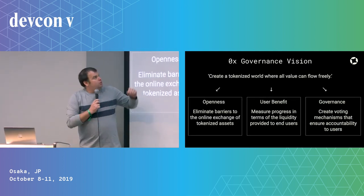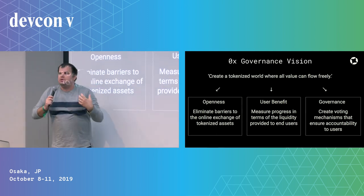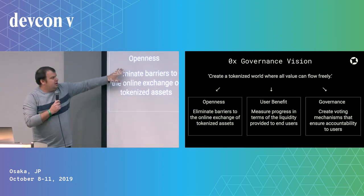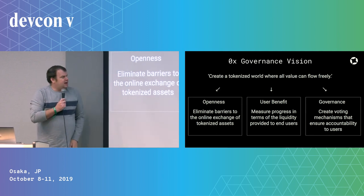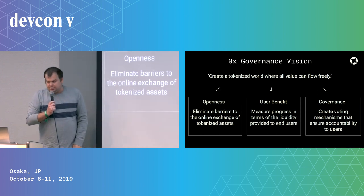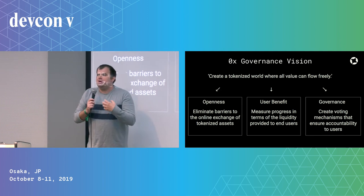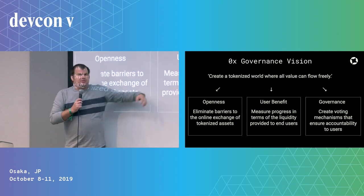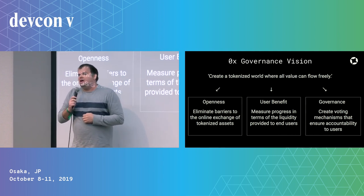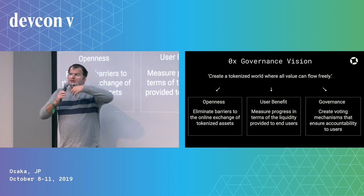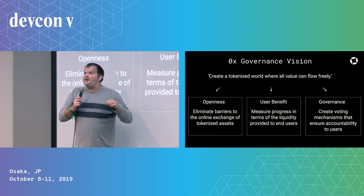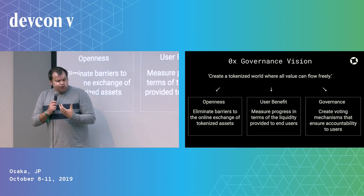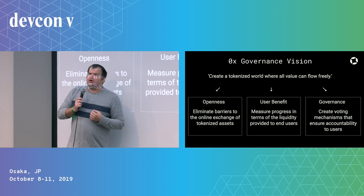This is important to our vision: to create a tokenized world where all value can flow freely — open and low-cost access to online exchange of tokenized assets. We measure our progress in terms of volume of tokens exchanged, prices available to users, and the variety of assets available on our relayers. To commit to this mission and ensure no rent extraction creates barriers, we want a governance mechanism that ensures the people who benefit from open access to online exchange are the same people determining the choices we make — accountable to the users benefiting from our software.